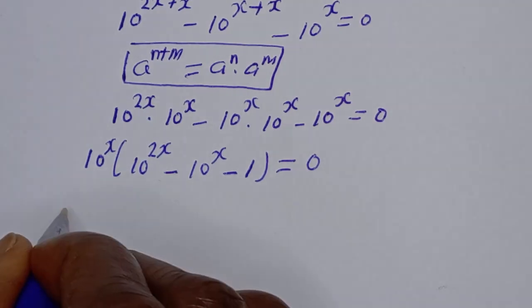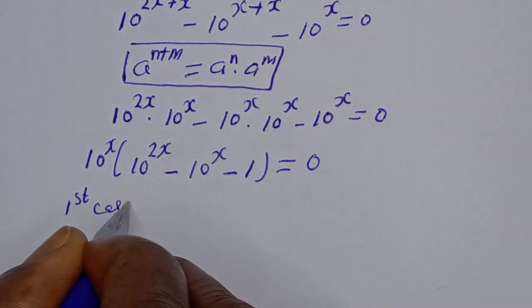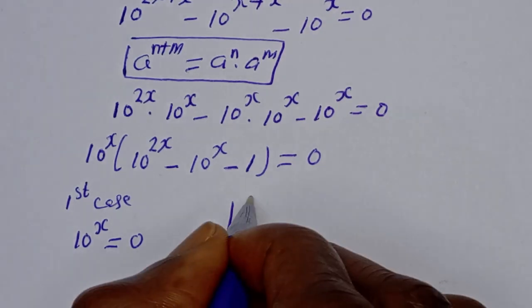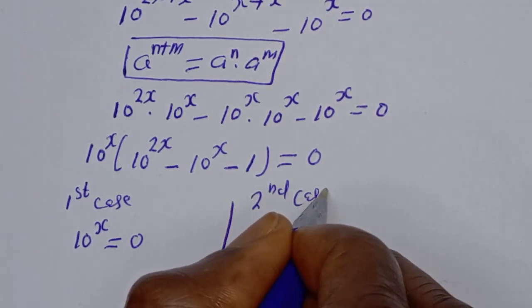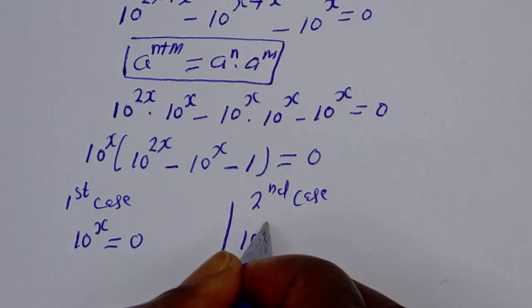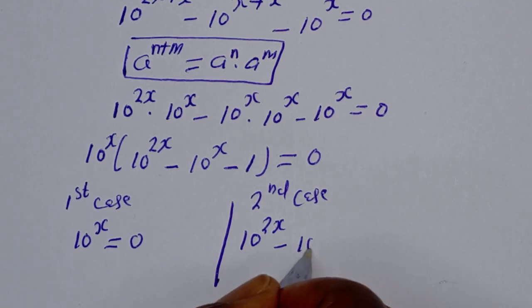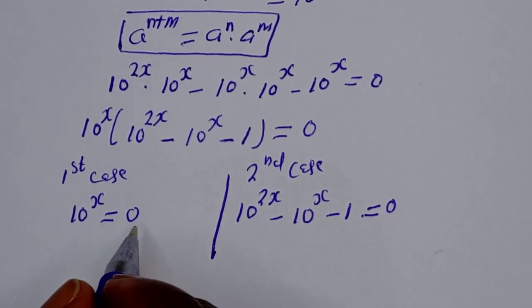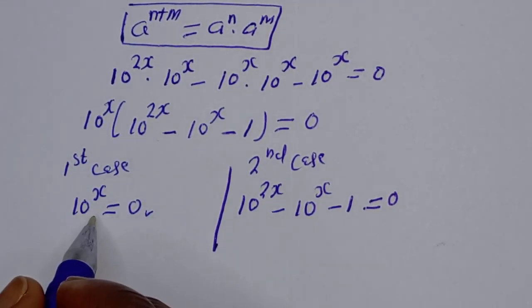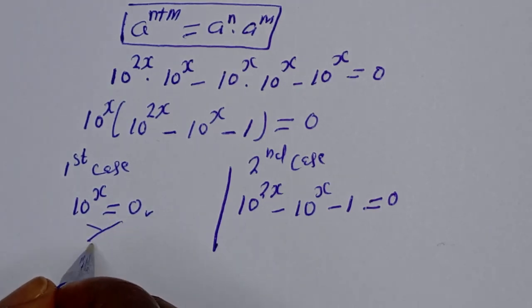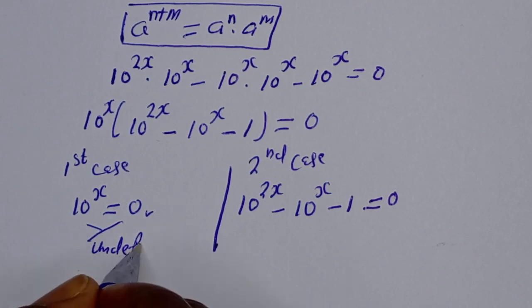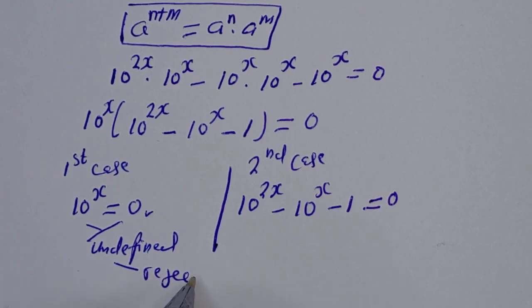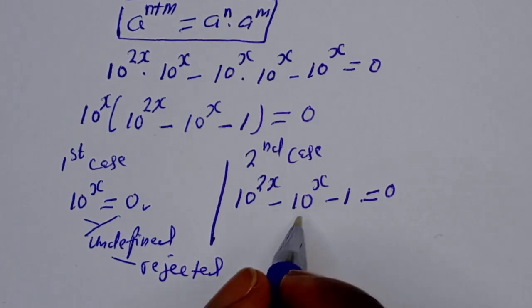From here, there are 2 cases. The first case is 10 raised to power s equals 0. We can see that 10 raised to power s cannot be equal to 0 — this is undefined — and the whole of this case is rejected.